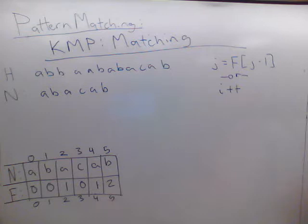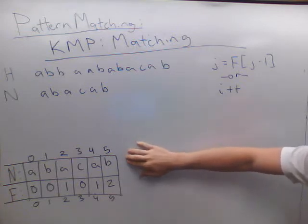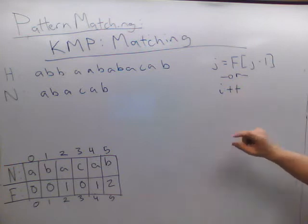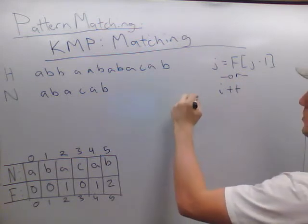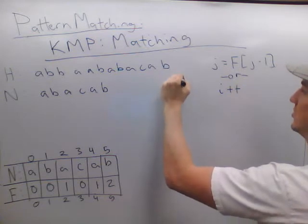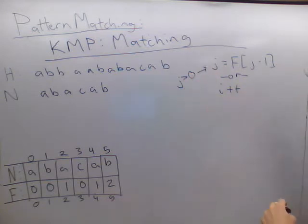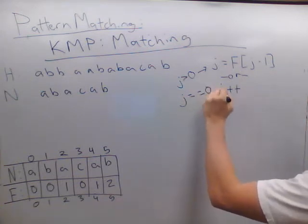Pattern matching with KMP requires us to use the failure function that we generated in the last video. We're going to use the failure function when there's a mismatch inside our string. We'll define index i and j in a second, but if j is greater than zero, we're going to use this first rule. If j is equal to zero, we're going to use this second rule.